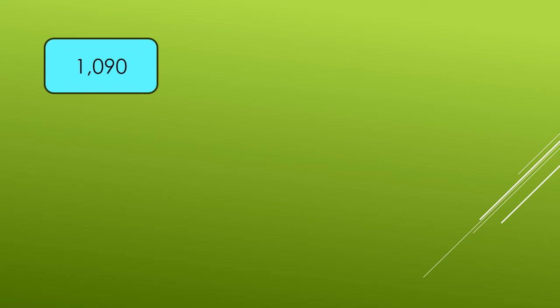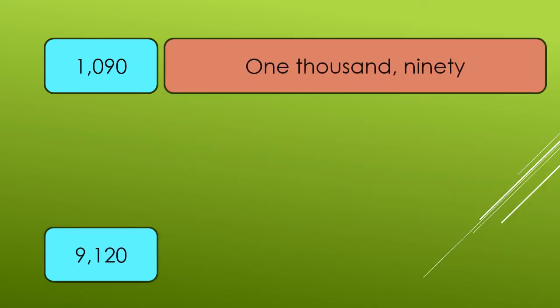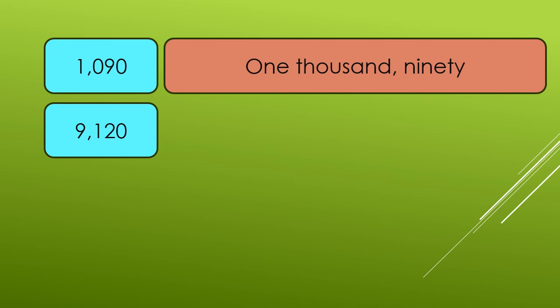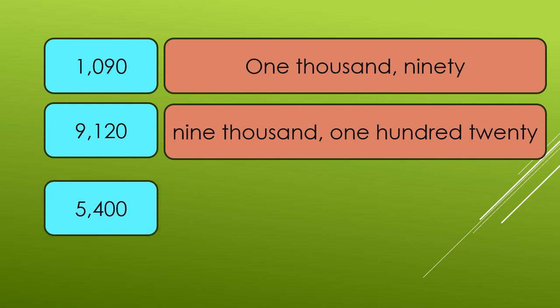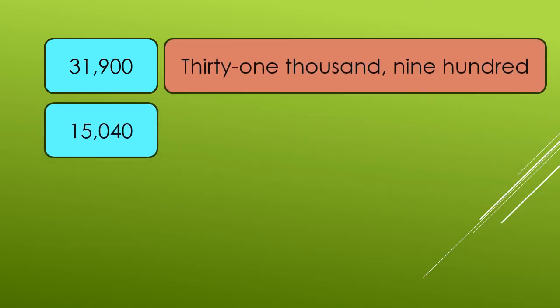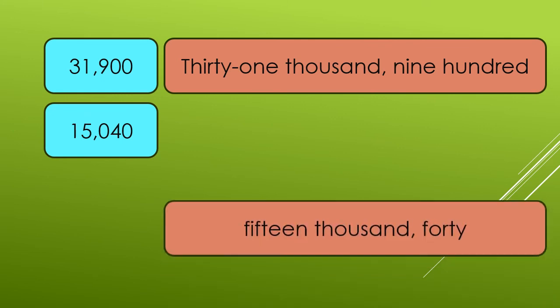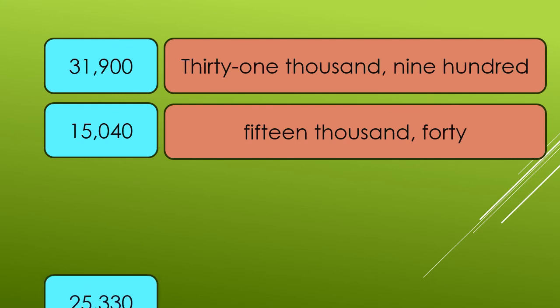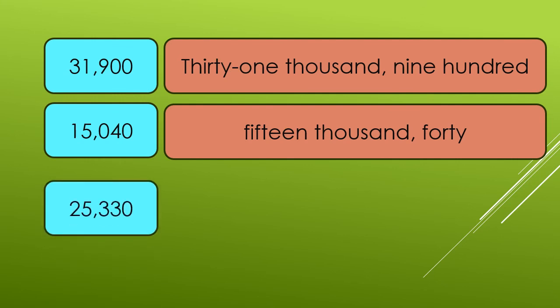This time, we write it in symbols. I will be giving numbers in symbols — write these numbers in words. We have 1,090. 9,020. 5,400. 5,070. 15,040. 25,330.